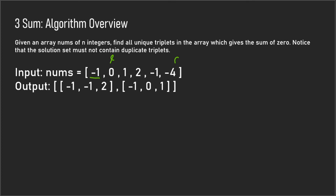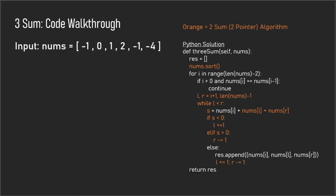We need to find which remaining elements plus the fixed number add up to zero. After each iteration we move the fixed number forward — to zero, then one, then two. When the fixed number reaches two, the left and right pointers are negative one and negative four, at which point we don't need to iterate anymore because we've already checked all possible combinations.